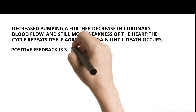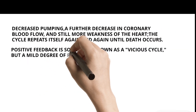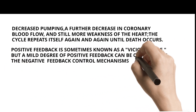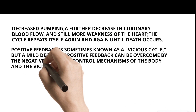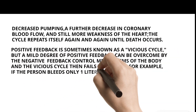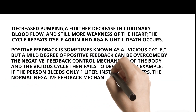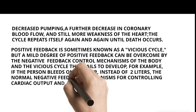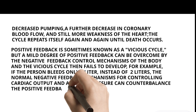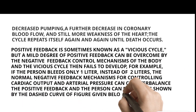Positive feedback is sometimes known as a vicious cycle, but a mild degree of positive feedback can be overcome by the negative feedback control mechanisms of the body, and the vicious cycle then fails to develop. For example, if the person bleeds only one liter instead of two liters, the normal negative feedback mechanisms for controlling cardiac output and arterial pressure can counterbalance the positive feedback and the person can recover, as shown by the dashed curve of the figure given below.